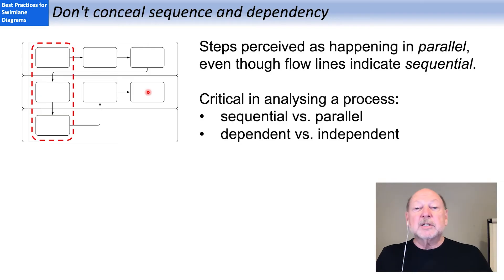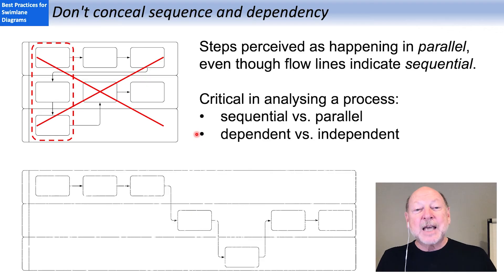Even though the flow lines tell us they're happening as part of a sequence. And that's important because sequential versus parallel, dependent versus independent are important aspects of process analysis. So I wouldn't draw it like this. I would draw the exact same flow as I've indicated here. And yes, it takes up more real estate, but now we can clearly see it is a single-threaded, entirely sequential process flow.